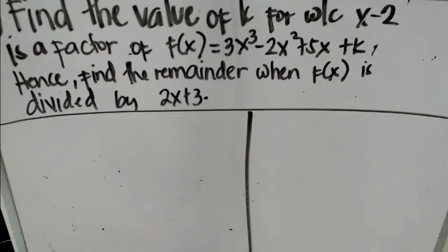Find the value of k for which x minus 2 is a factor of the function 3x cubed minus 2x squared minus 5x plus k. Hence, find the remainder when f of x is divided by 2x plus 3.